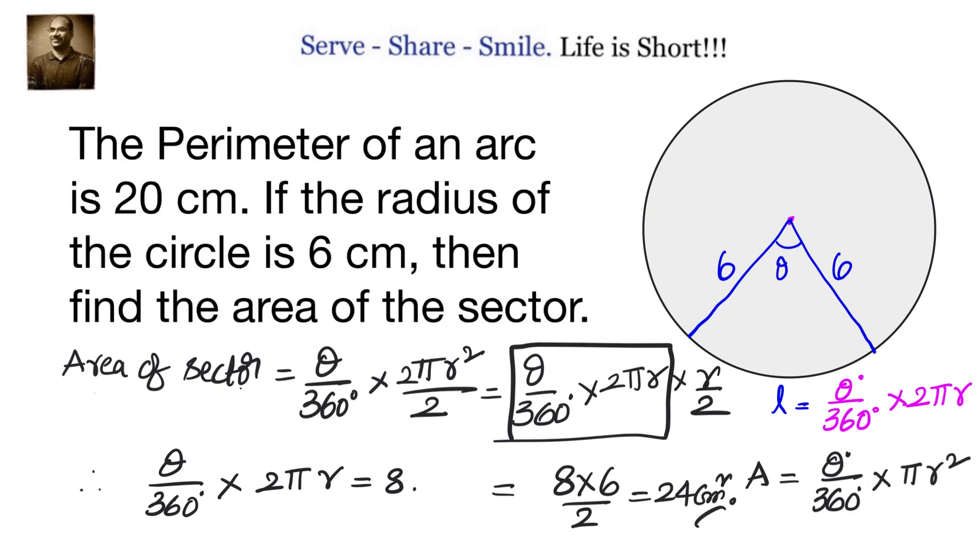So without knowing the value of theta we are able to calculate the area of the sector if we know the perimeter of the arc. For that we leveraged the relationship between the length of the arc and area of the sector. Area of the sector is nothing but equals to length of the arc into r by 2, that is the formula what we have used here.